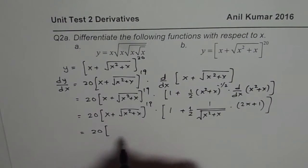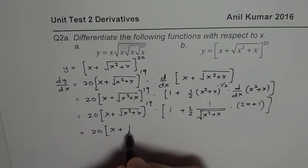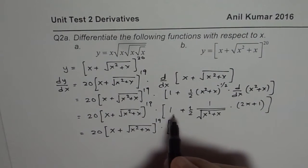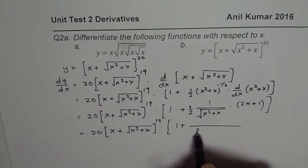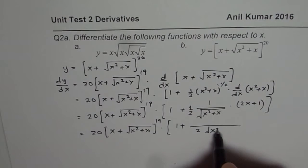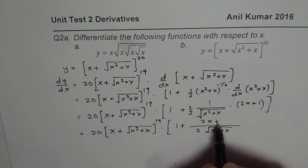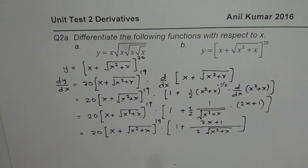There is no need to simplify this. We have x plus square root of x squared plus x to the power of 19 times 1 plus, within denominator we have square root of x squared plus x and in the numerator we have 2x plus 1. So that is how you could find derivative of the given function.